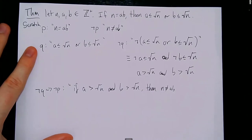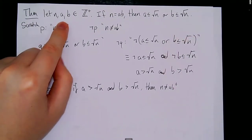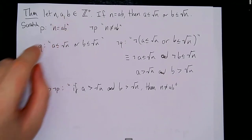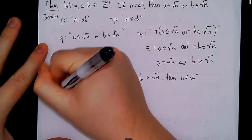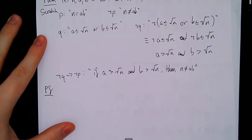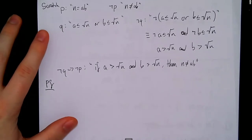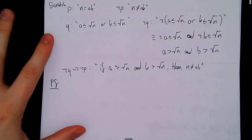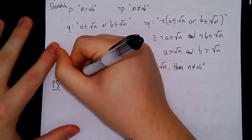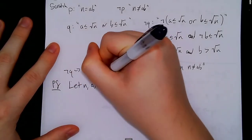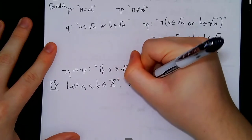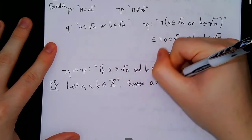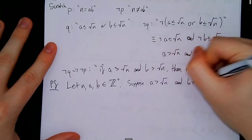Let's take a look at this proof. For this one, we're going to do some pretty tricky usage of greater-than signs. We'll say: let n, a, and b be in the set of positive integers, and suppose that a is greater than the square root of n and b is greater than the square root of n.